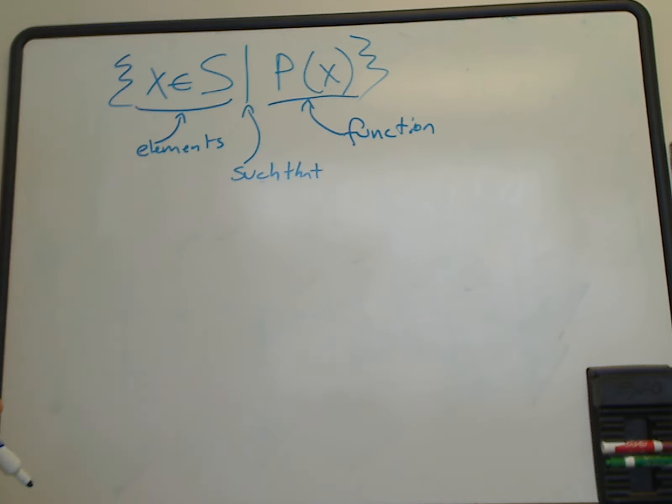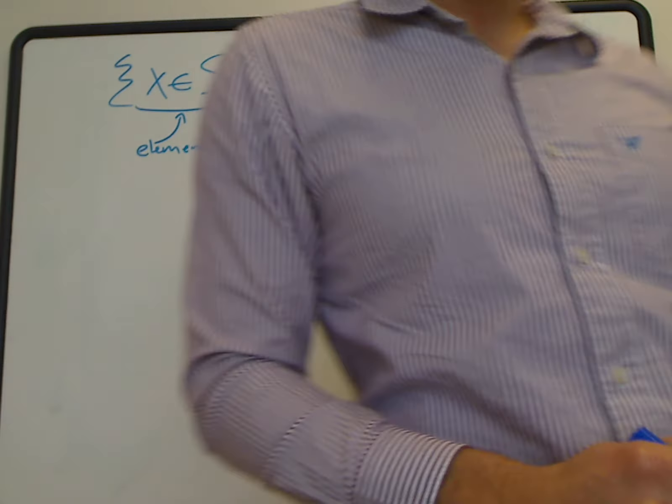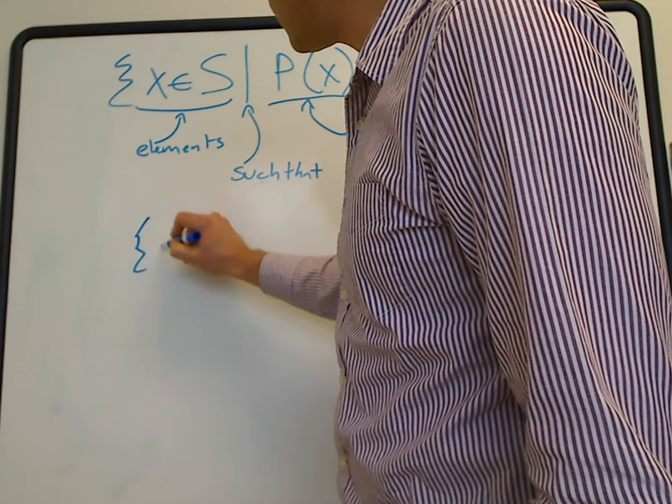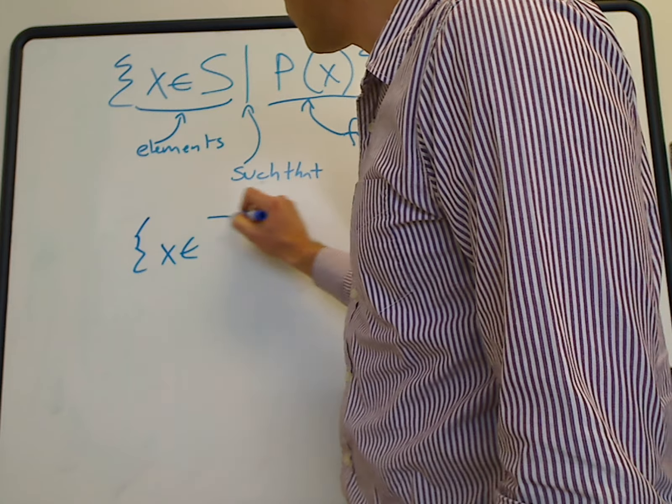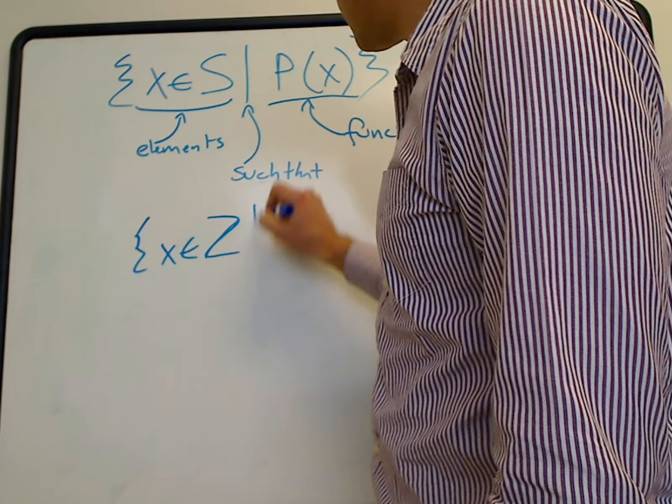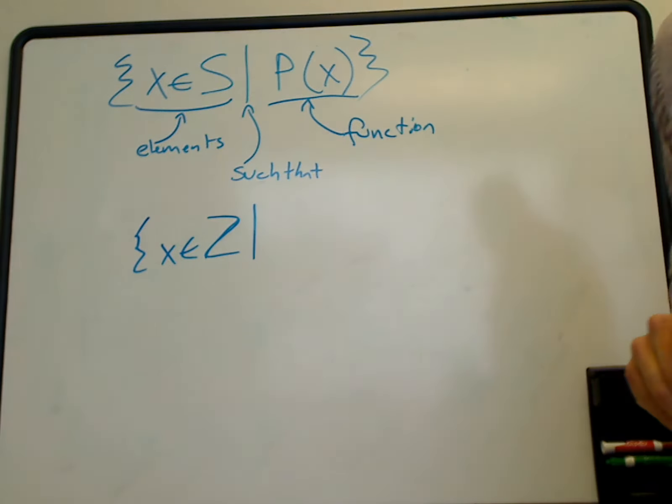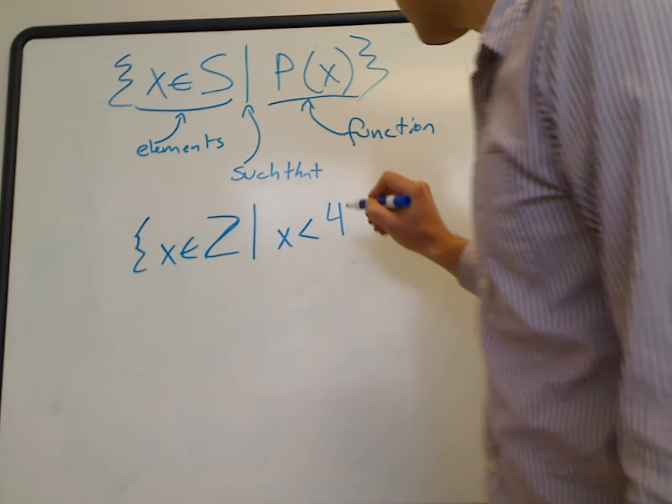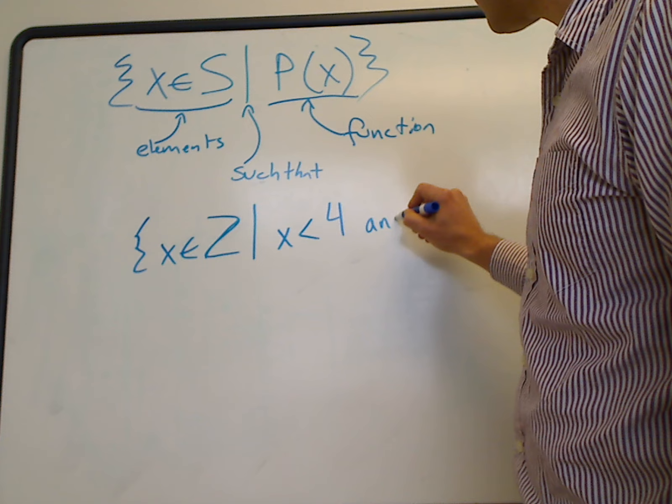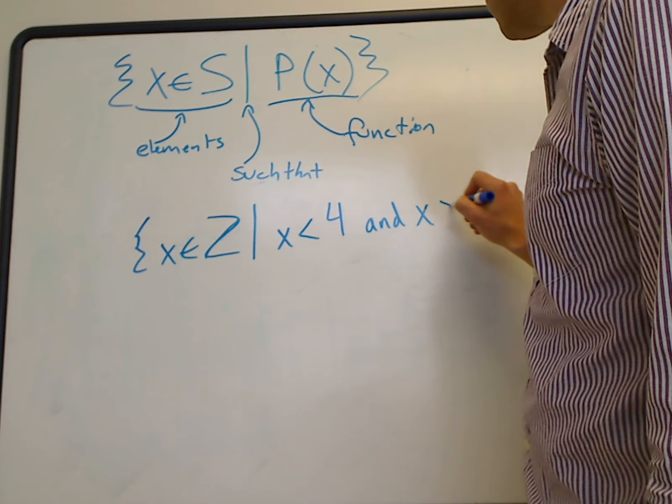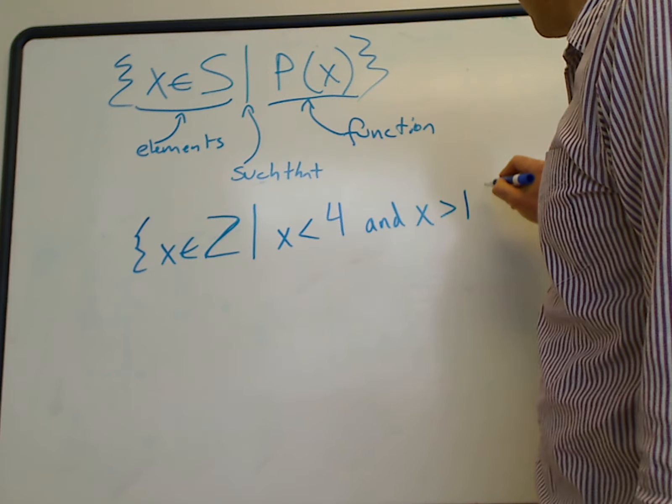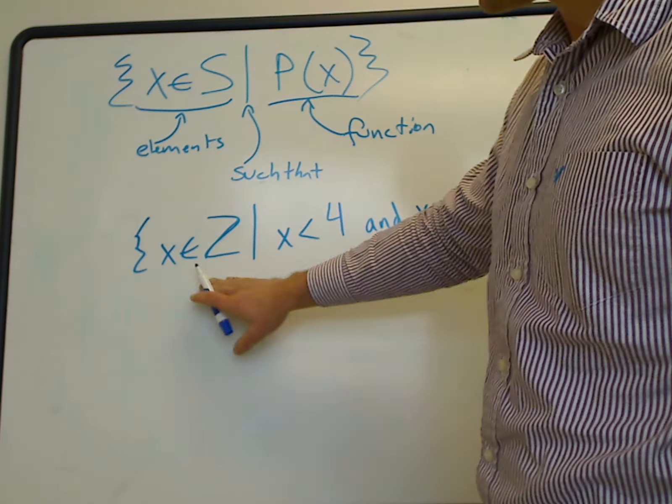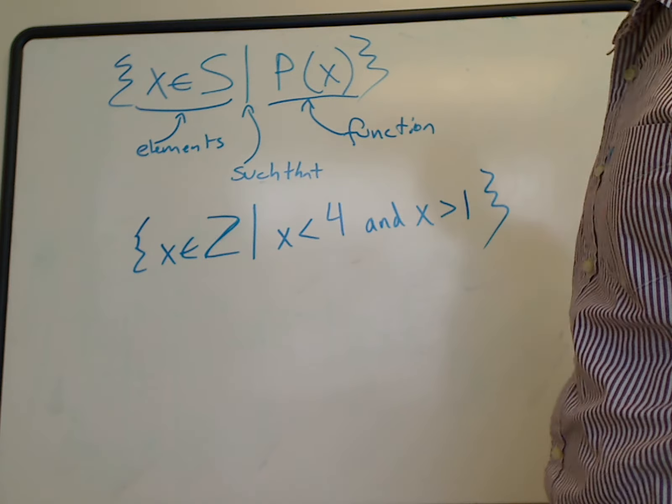Let's look at an example set. We have the set x element of the integers such that x is less than four and x is greater than one. Our function is shown here on the right and the elements we described are shown on the left.